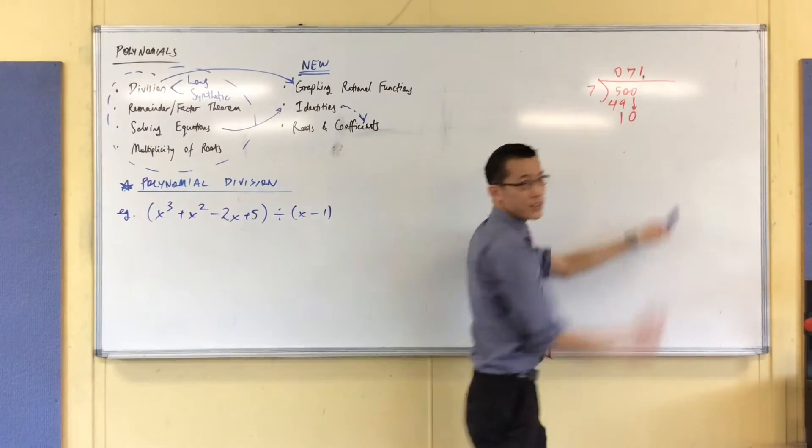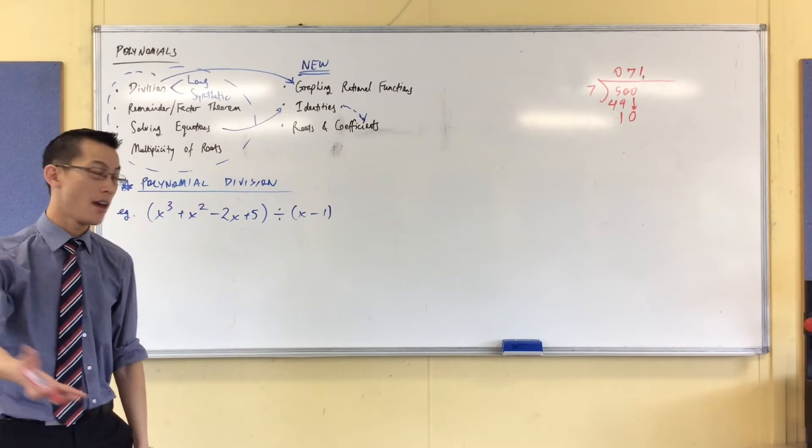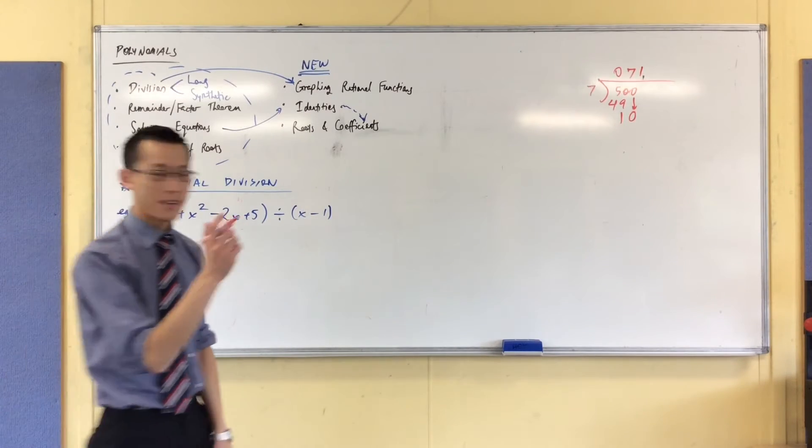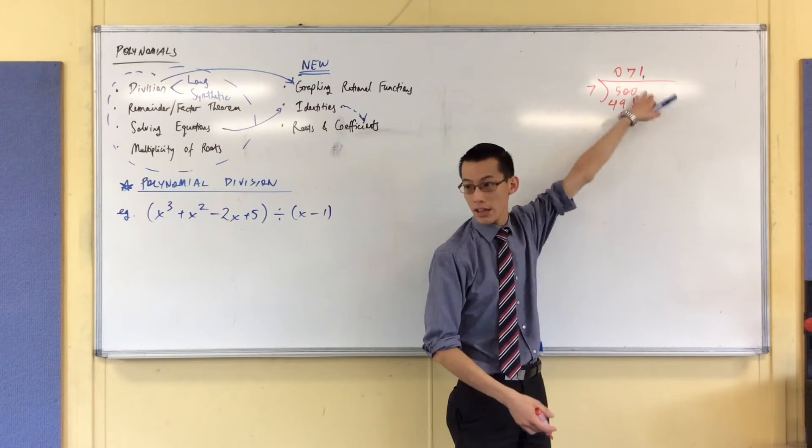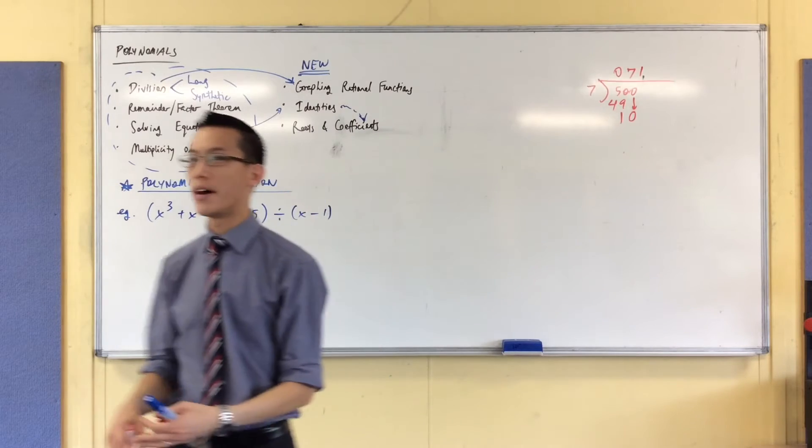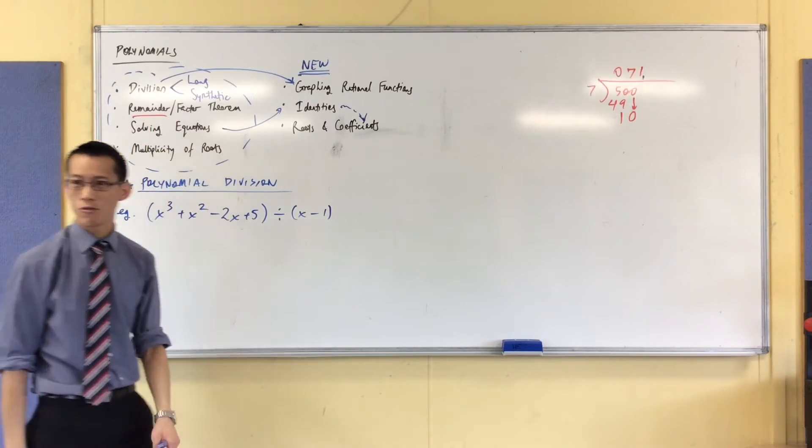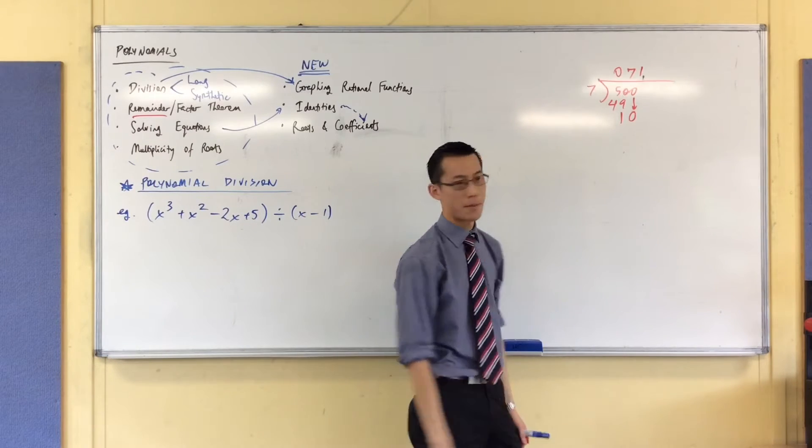So now I've actually finished my division in terms of knowing how many whole lots of 7 I can fit into there, because I have no more numbers to appeal to. You see my actual number 500 has stopped. But I do want to do this last step so I know what is left over, because remainders are important to me, especially if they're 0.